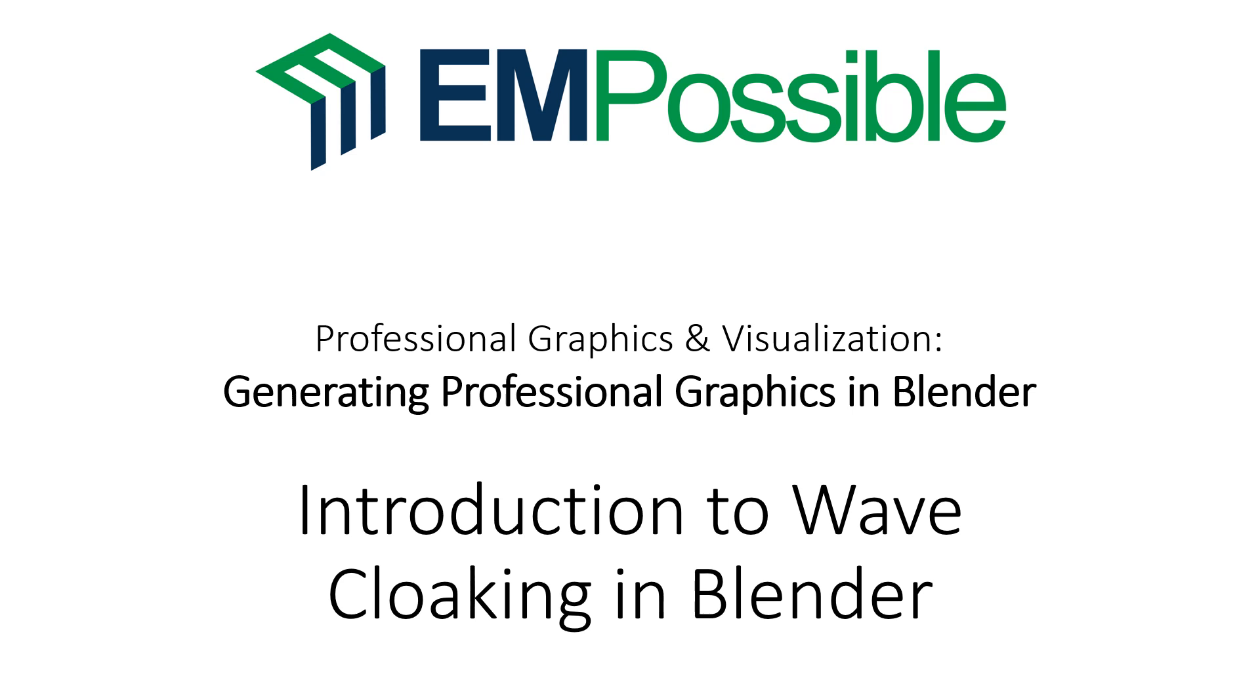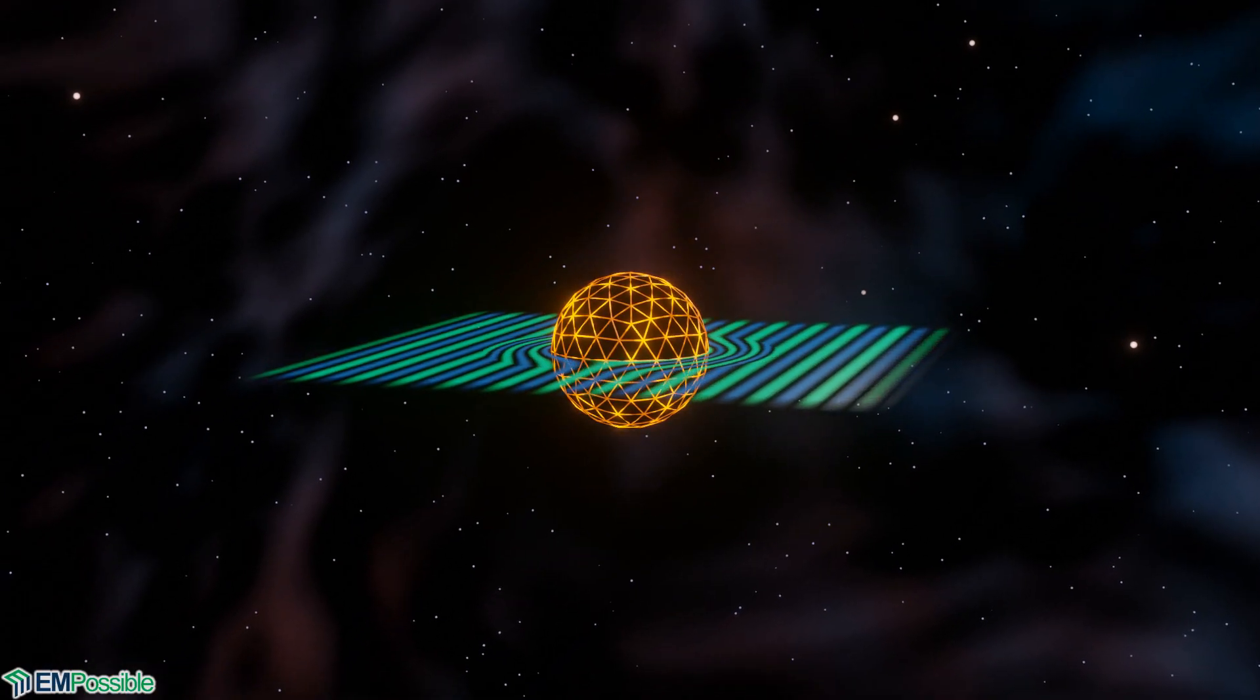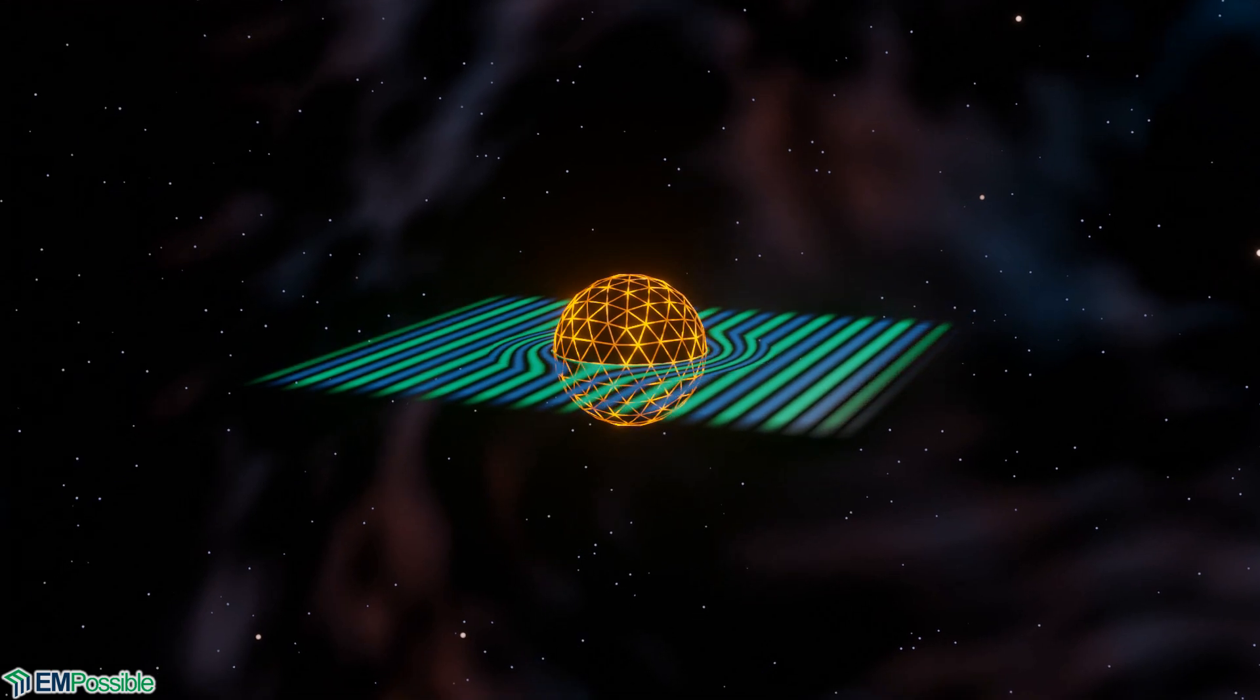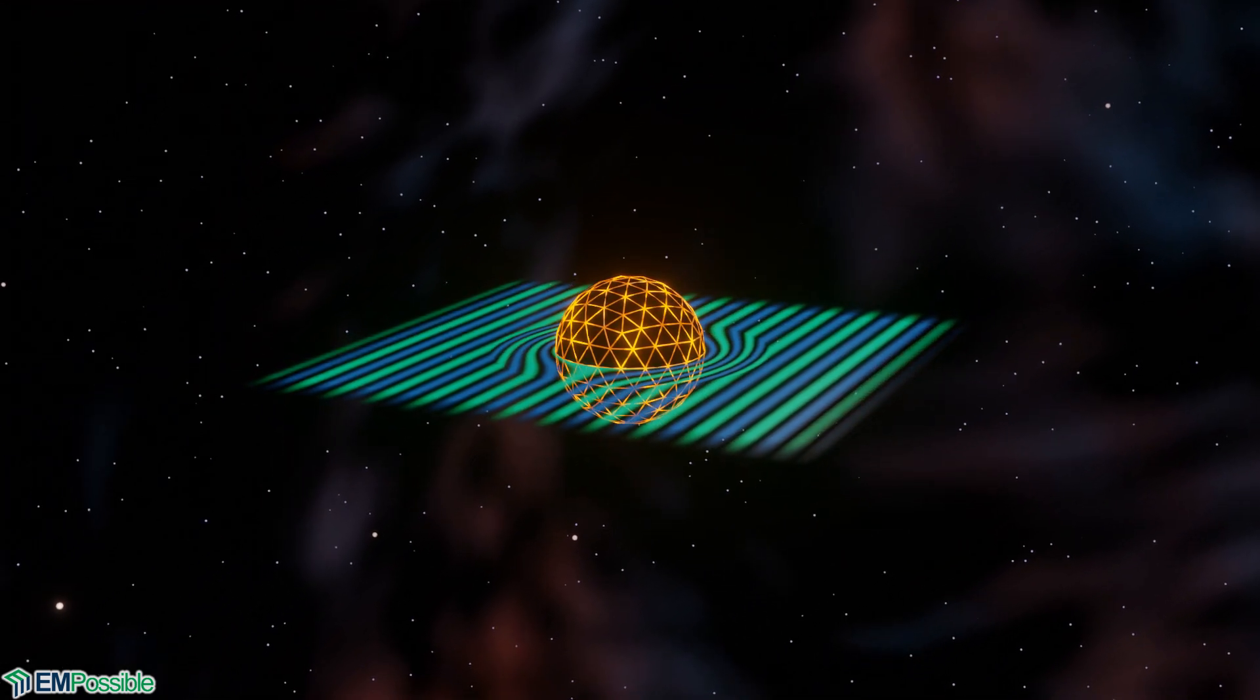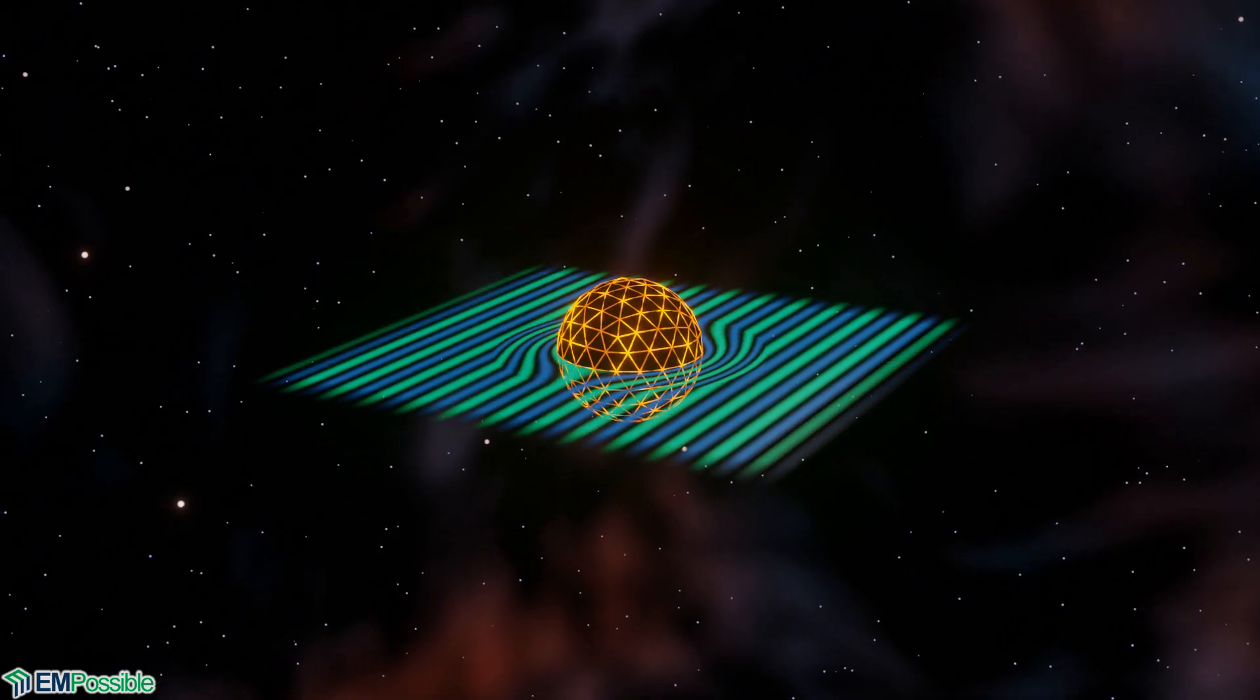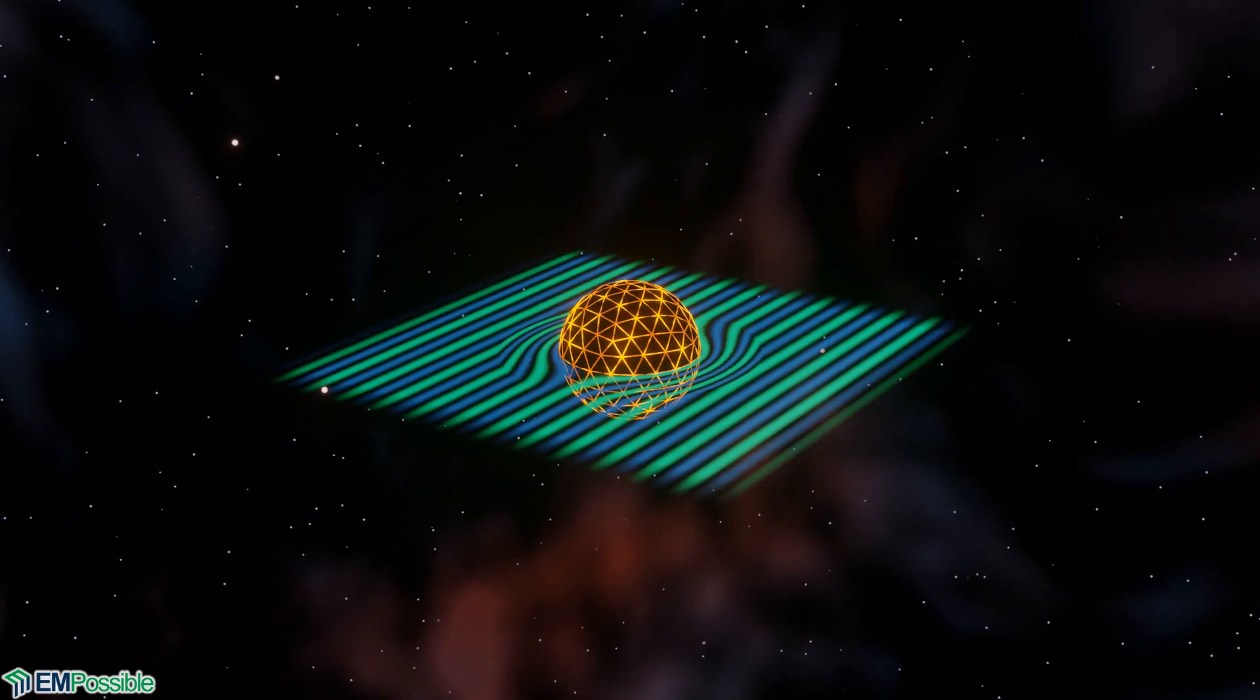Introduction to wave cloaking in Blender. Here is the goal of this series of videos: we're going to calculate a wave that can wrap around an object and come out on the other side just like it looked before. This is what a perfect cloak would have to do in order to be invisible.